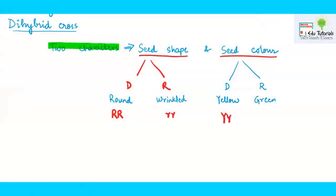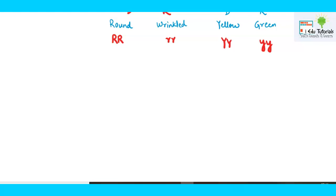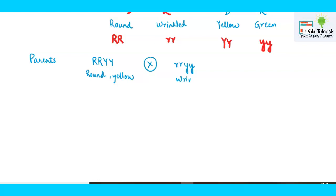For the dominant yellow seed color you will use capital Y capital Y, and for the recessive you will use small y small y. Now let's start with the genetic cross. The male parent is in the homozygous dominant condition, so it had produced round seeds that were yellow in color. The female parent had both recessive characters, written as small r small r and small y small y, meaning the phenotype is wrinkled seeds that are green in color.